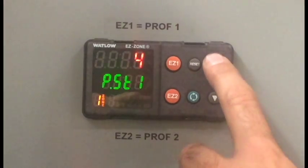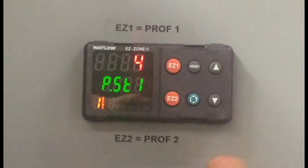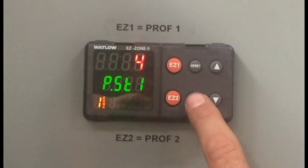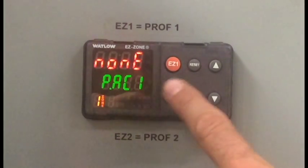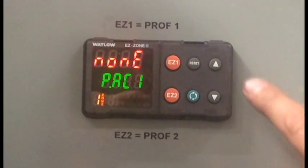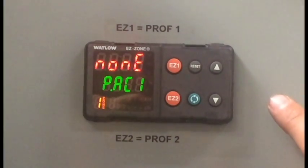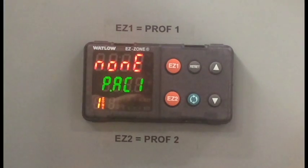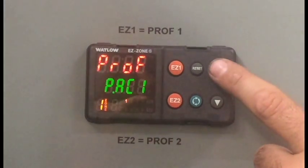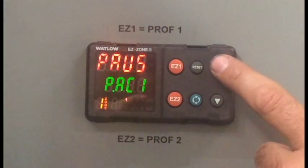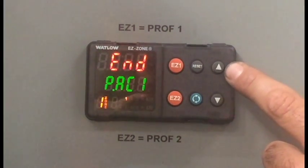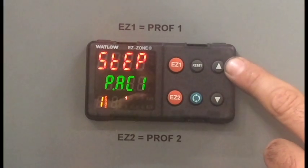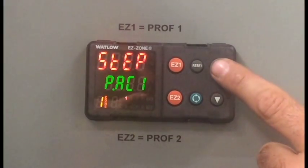We'll choose profile four. Press the advanced key for the profile action menu. It defaults to none. You can scroll all the way through looking at your choices and stopping on none, and I'll explain them: start profile, pause profile, resume profile, end profile, or step. You can choose a different step within the profile to monitor.